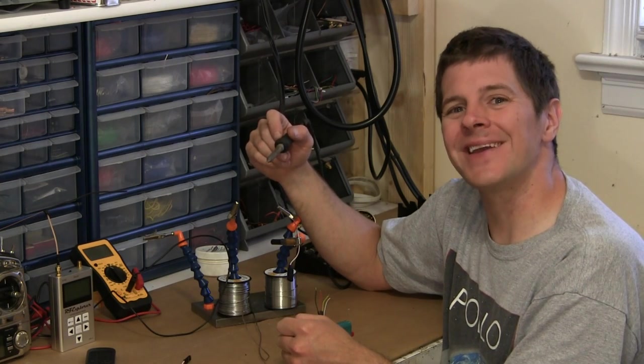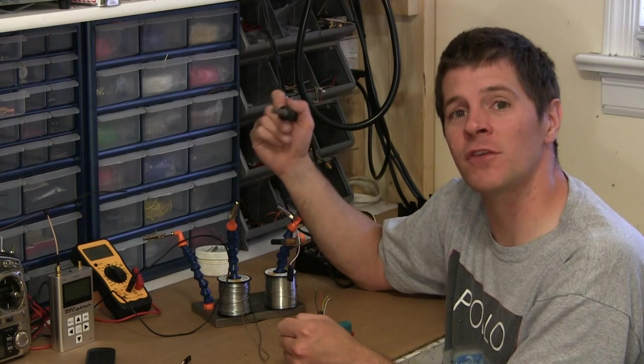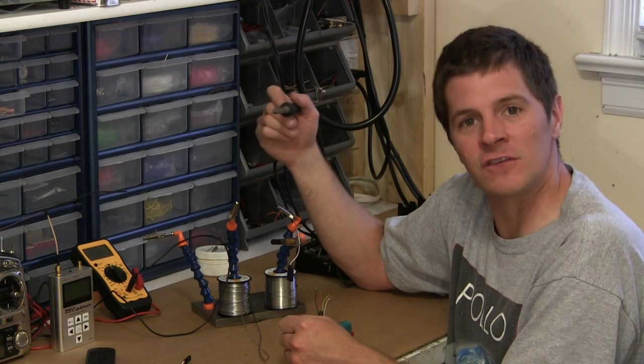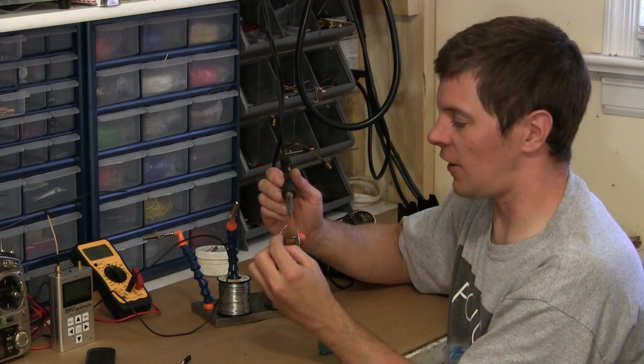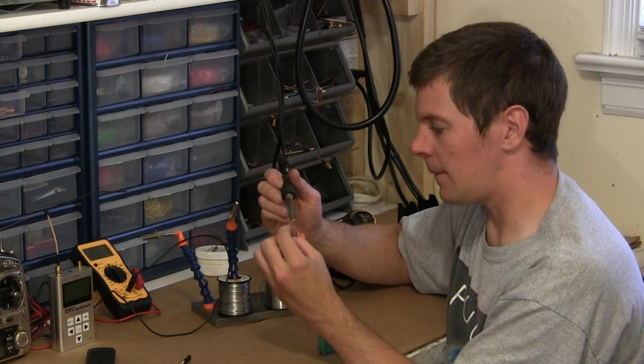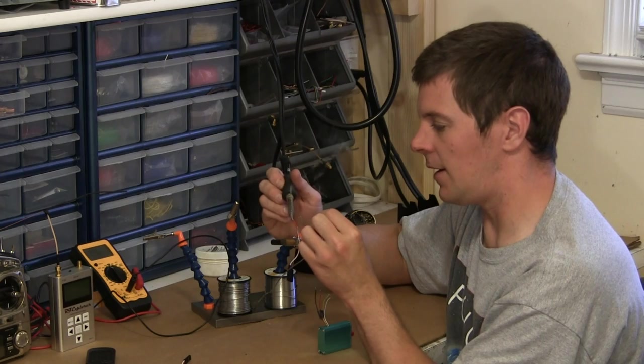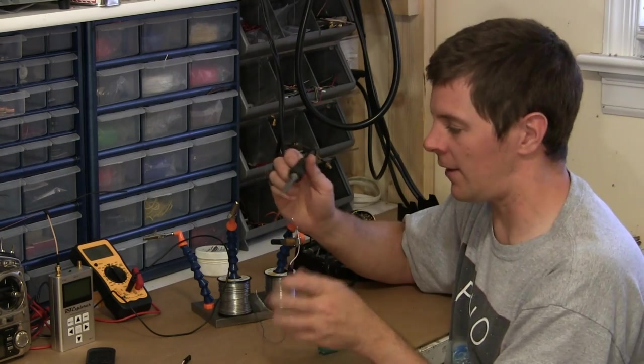The key to soldering properly is to heat up the component with the soldering iron, not the solder. The way I do this is simply touch the soldering iron to the end of the wire and then touch my solder right below the base and let it wick down.